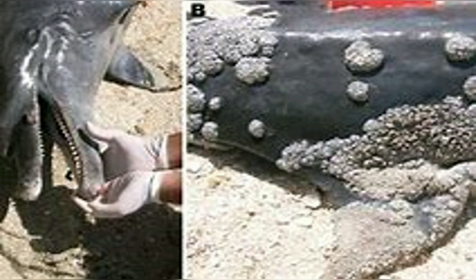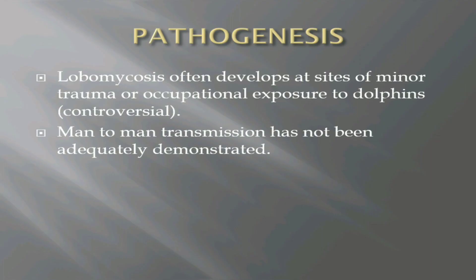This image shows multiple lesions in a dolphin which resemble those caused by Loboia loboi in human beings. Lobomycosis often develops at sites of minor trauma. Some people have been said to have acquired the disease through occupational exposure to dolphins; however, this is controversial. Man-to-man transmission has not been adequately demonstrated.